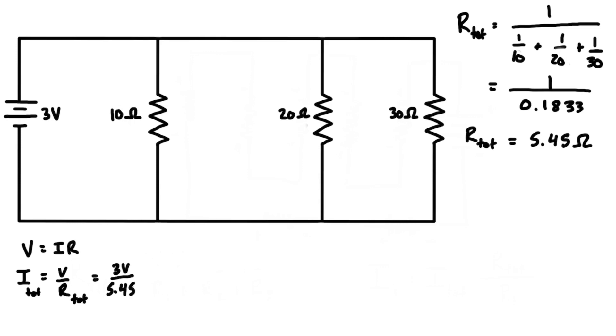It's 3 volts over 5.45 ohms, and that gives us a value of our total current of 0.55 amps. That is the amount of current flowing out of the voltage source right here. We can label it as I_tot equals 0.55 amps, and that's the same amount coming in here. Then we can label on each of the unknown currents. Let's call this i1, i2, and i3.